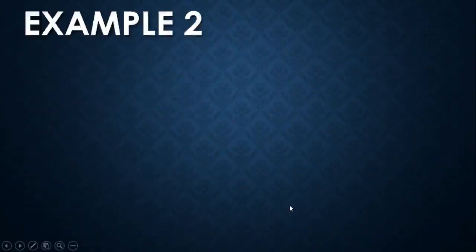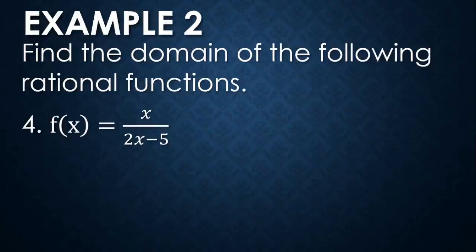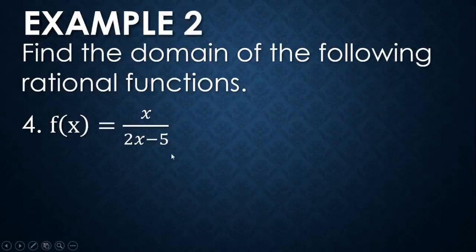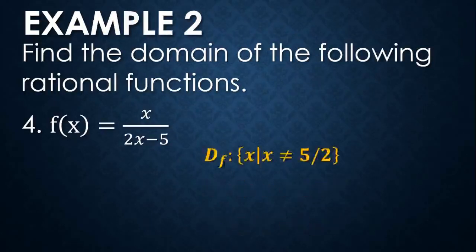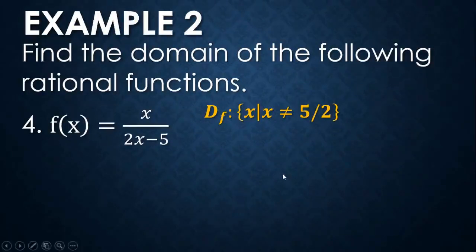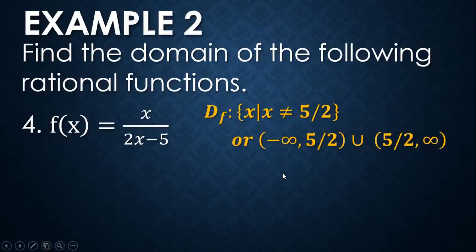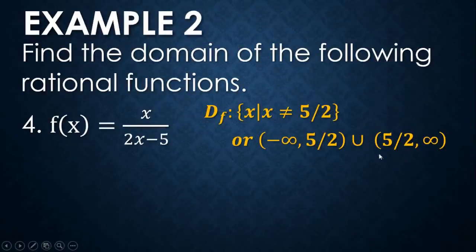For number four, f(x) = x / (2x − 5). The restriction is x = 5/2, because equating 2x − 5 to zero and solving gives x = 5/2. Therefore the domain is all real numbers except 5/2. In interval notation: (−∞, 5/2) ∪ (5/2, +∞). This open interval tells us that 5/2 is not in the domain of the function.